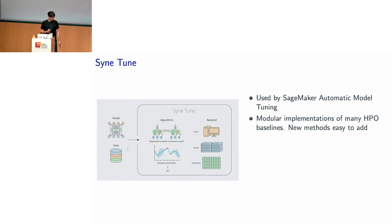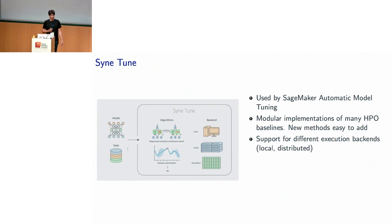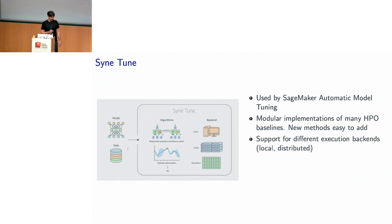SyneTune is an open source library — you can download it from GitHub — and it's used in SageMaker automatic model tuning. It has modular implementations of many HPO baselines, and new methods are fairly easy to add. It supports different execution backends, so you can run comparisons under different situations: there's a local backend that runs on a single machine, a cloud-based distributed backend, and also a simulator backend. The simulator backend, together with a black box repository, allows you to do wall-clock-time realistic simulations from surrogate benchmarks with any method and any number of workers.